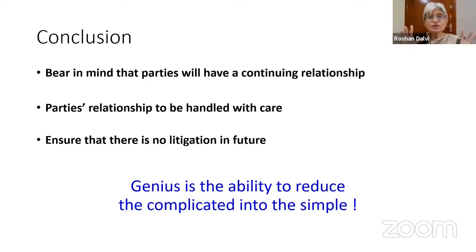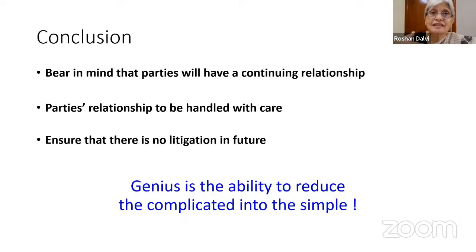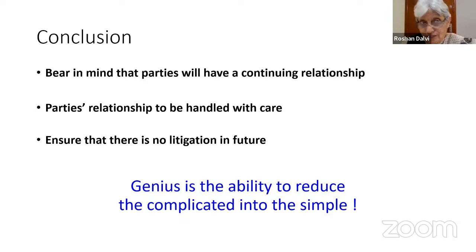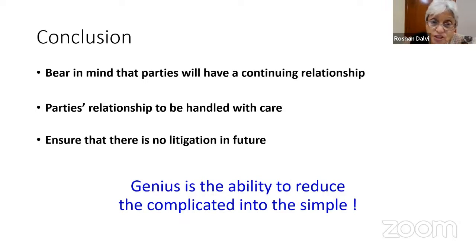In this totality, what begins right from the invitation to offer, then offer and acceptance, then there is a contract. There are certain contracts which cannot be performed and which are not enforceable. All others are enforceable. There may be reciprocal promises, written and oral contracts, and then there may be a breach. The conclusion is that parties have a continuing relationship in most of these contracts, and those relationships must be handled with care. You may win a battle but lose the war, and you have to ensure there is no litigation in future.